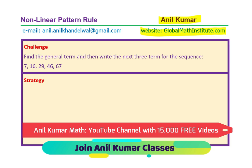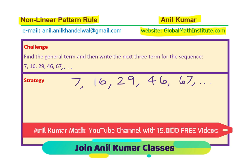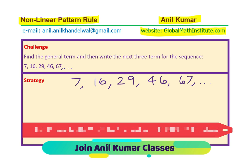Find the general term and then write the next three terms for the sequence: 7, 16, 29, 46, 67. Let me write down the sequence: 7, 16, 29, 46, 67 and so on — the sequence continues. We need to find the general term and then write the next three terms. This is a very interesting question based on non-linear pattern rules. I would like you to pause the video, attempt it, and then look into my suggestions.